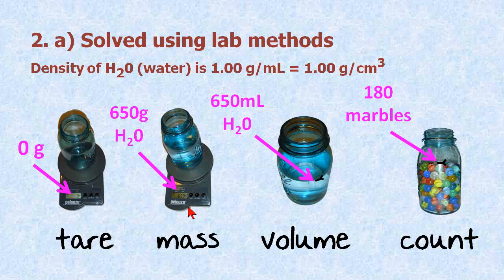I pour in 650 grams of water, which is the mass, and it's equivalent to 650 milliliters of water because of this conversion factor right here. If I put a mark on the side of the mason jar,